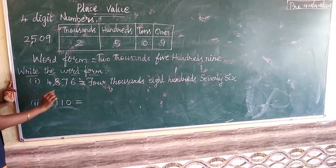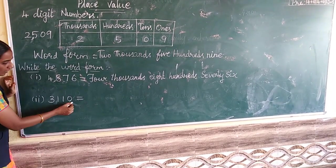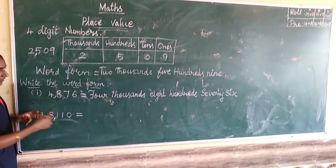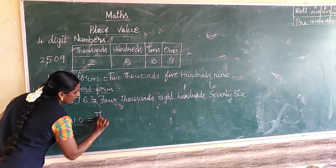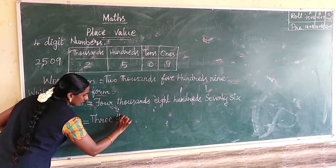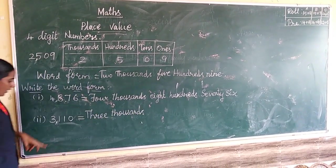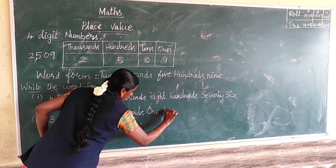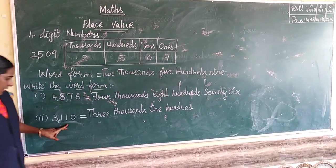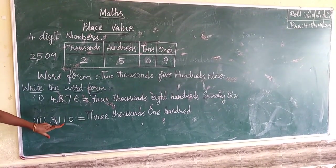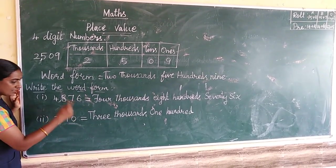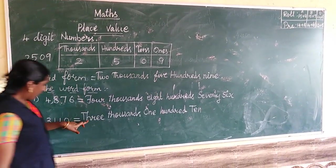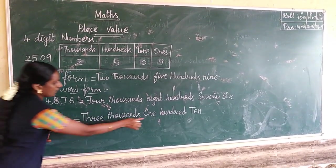Next example — the number is 3110. First use the commas: after 3 place values, use the comma. The highest place value is 3, which is the 1000s place, so 3000. Next, the 100s place: how many 100s? 1, so 100. The 10s place is 1, so that means 10. The 1s place is 0, so we join and read: 3110 equals 3000 + 100 + 10.